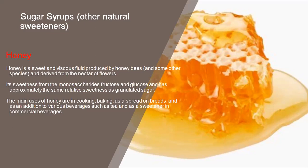Honey contains around 75 percent invert sugar and 15 to 20 percent water. Honey mainly consists of invert sugar which has been produced by enzymes produced by the bee. The main uses of honey are in cooking, baking, as a spread on bread, and as an addition to various beverages such as tea as a sweetener. Nowadays people have become very health conscious, so it is better to use natural sweetener. In green tea, lemon tea, or different kinds of teas, people also use honey, which is good for your health instead of using white sugar.